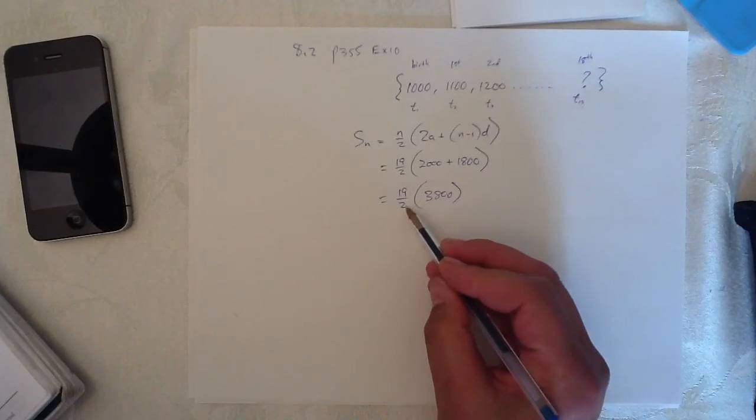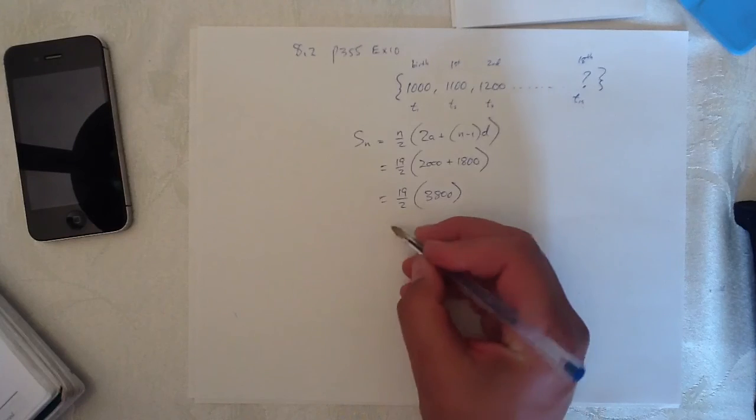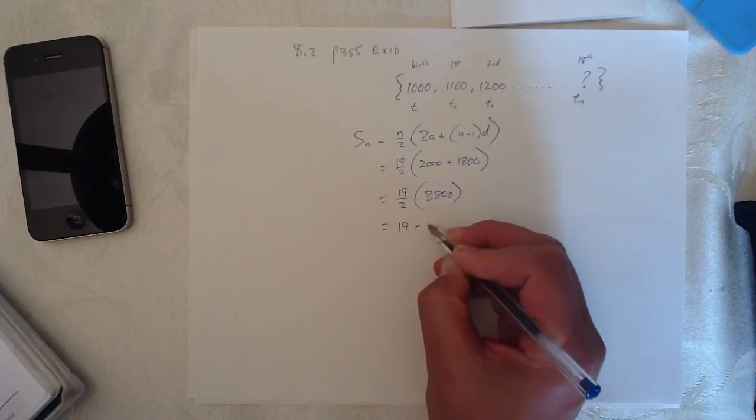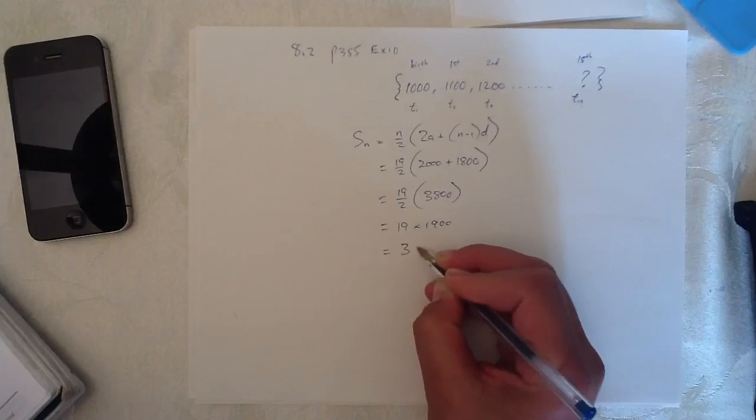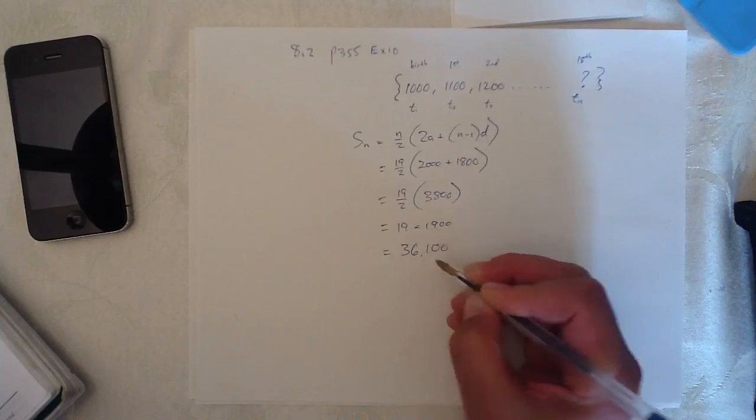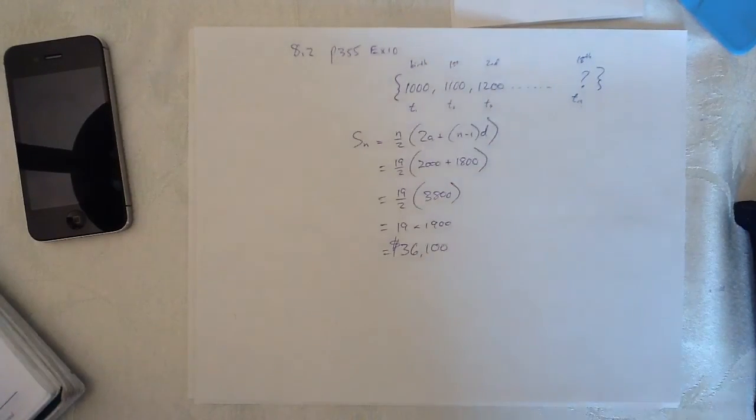And if we go ahead and divide by 2 here, we actually get 19 times 1,900, which equals 36,100. And that's your answer.